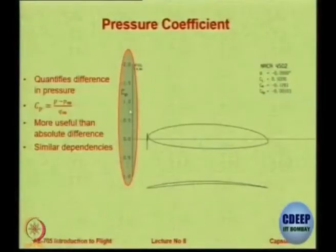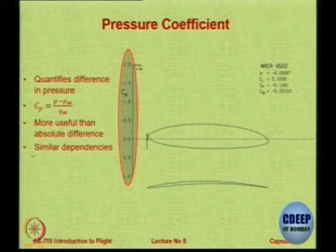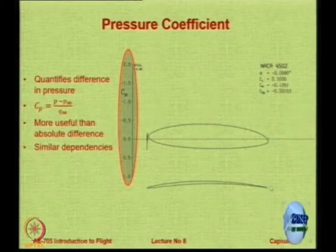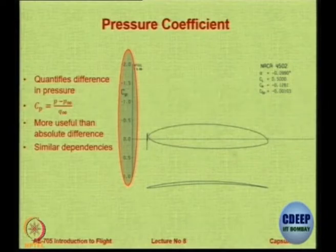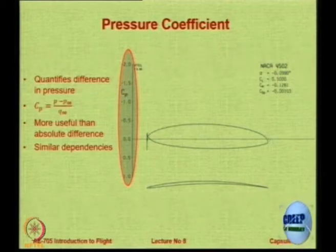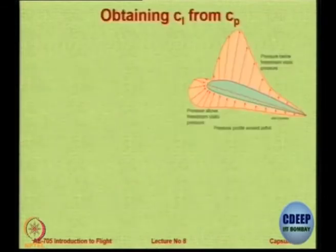When Cp equals zero, it means P equals P∞. There are two curves here — one for the upper surface and one for the lower surface. To obtain CL from Cp, and also CD from Cp, you use the pressure distribution — pressure below free-stream on top and pressure above free-stream on the bottom — plotted around the aerofoil.